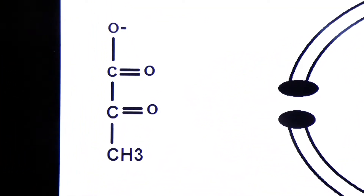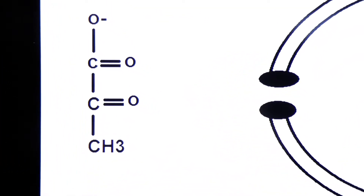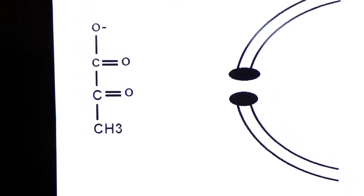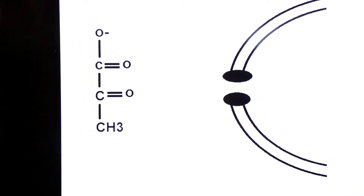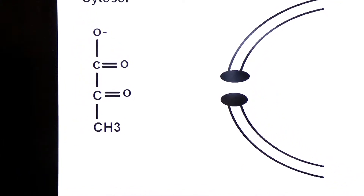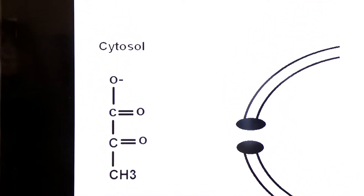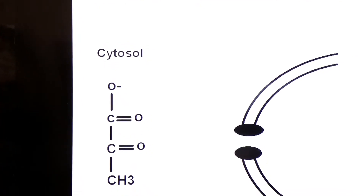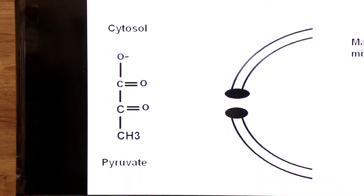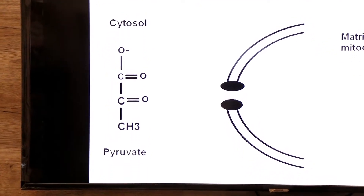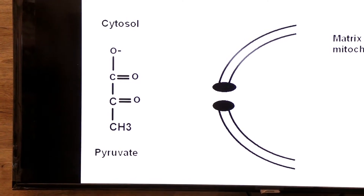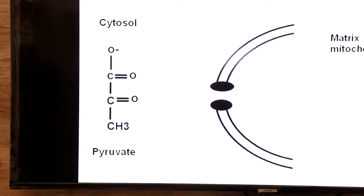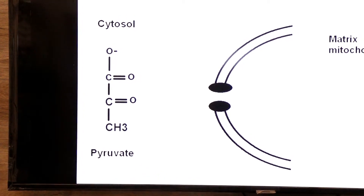Focus here — this is the molecule of pyruvate. These three-carbon molecules of pyruvate were produced in the cytosol. This three-carbon molecule is called pyruvate, also called pyruvic acid.